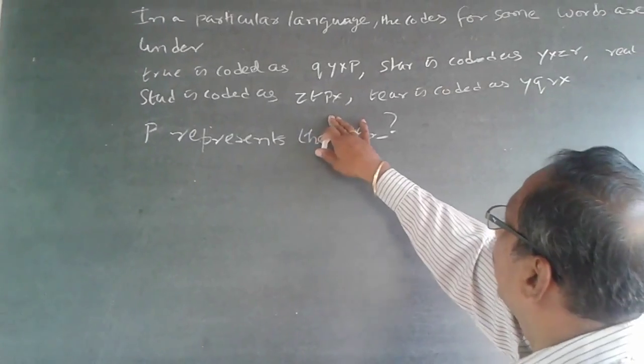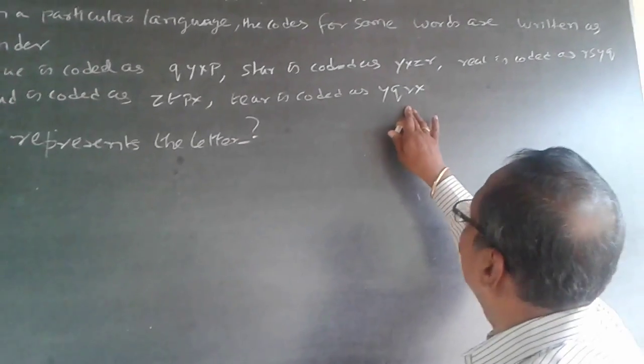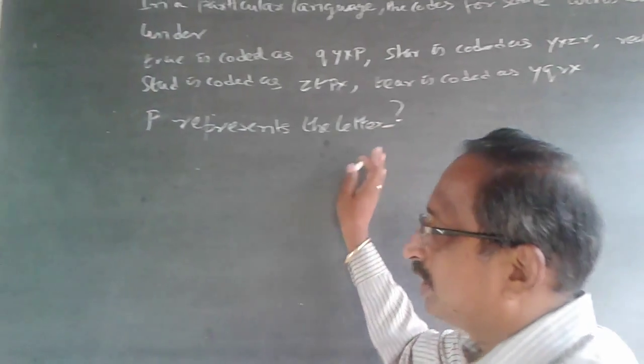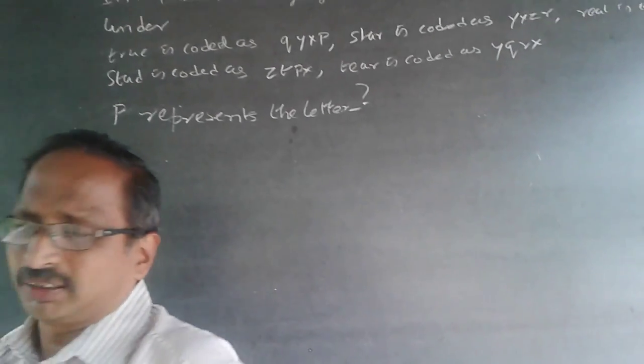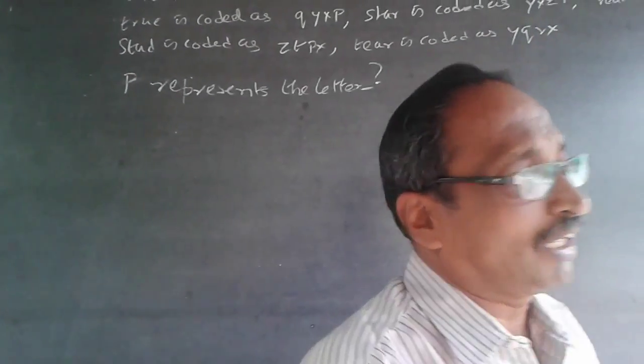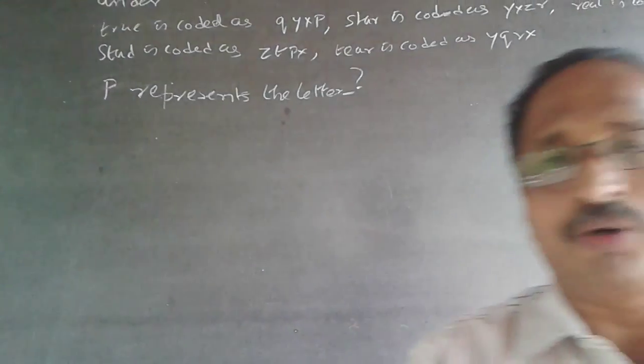START is coded as ZTPX, HERE is coded as YQRX. P represents the letter - what? This is a simple question of logical reasoning coding-decoding.